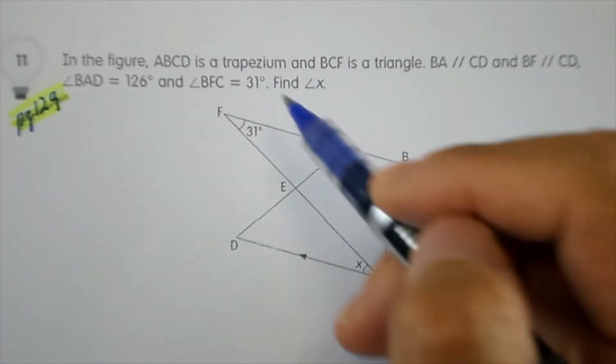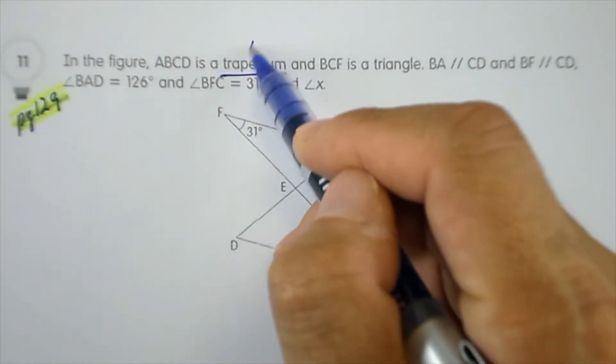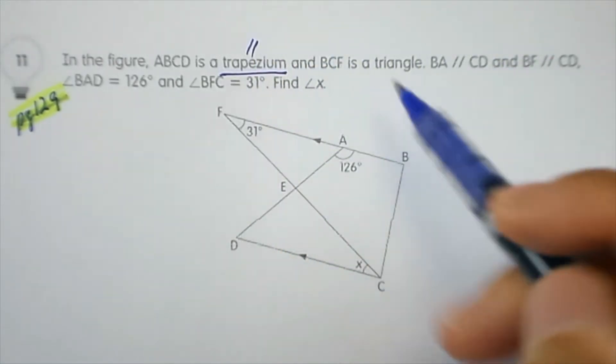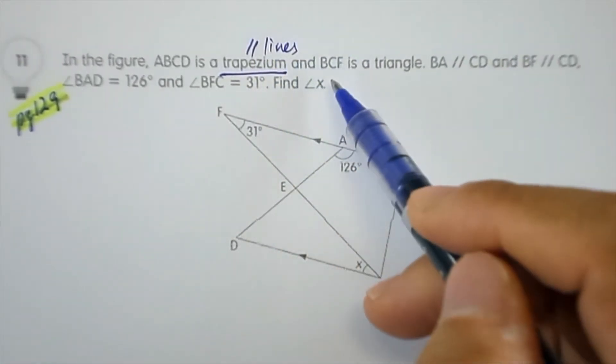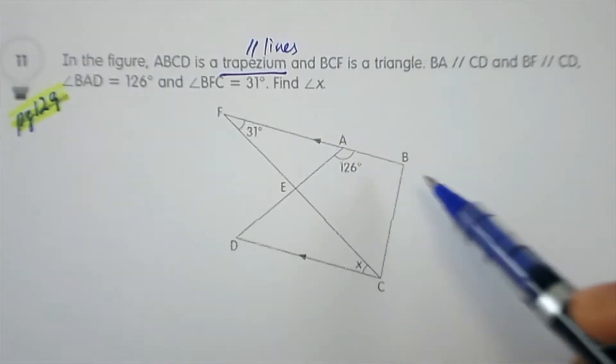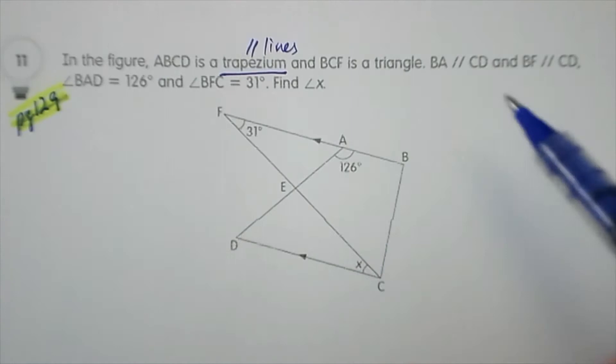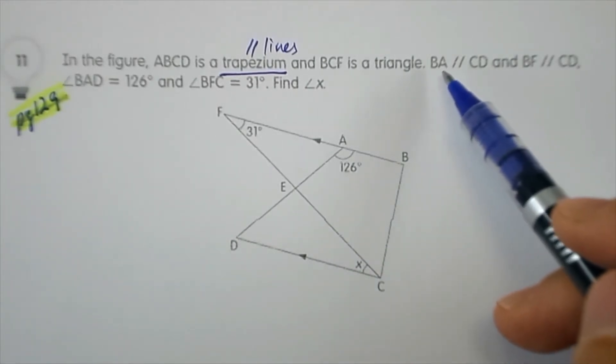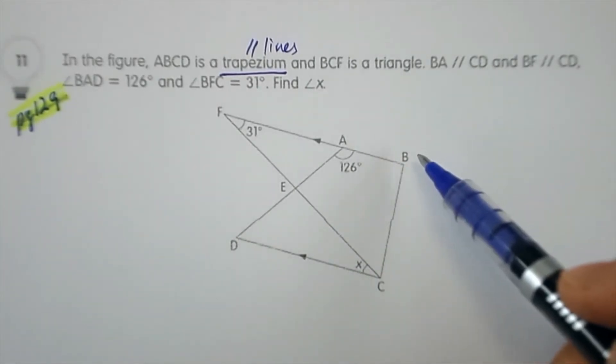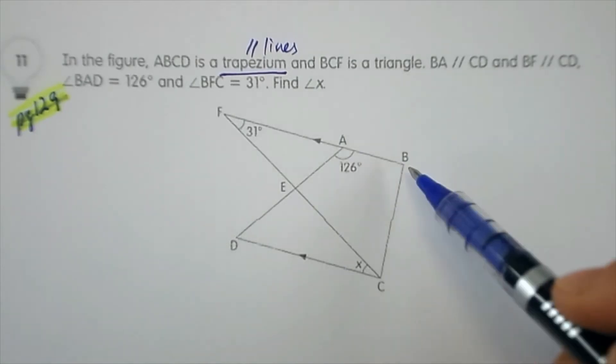In a trapezium, you have a set of parallel lines, and BCF is a triangle. Where's BCF? BCF is a triangle here, whereby BA is parallel to CD.